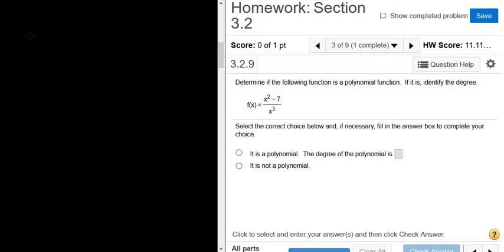Determine whether the following function is a polynomial function. If it is, find the degree. We have f(x) equals x squared minus 7 over x cubed.